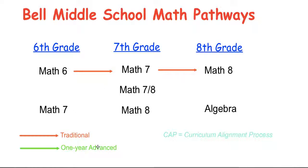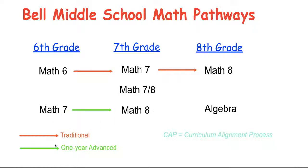The one-year advanced route is for students who have already taken Math 6. As I mentioned, the CAP is crucial here — if your student has not taken Math 6, they would have essentially skipped an entire year of math. Students who have taken Math 6 will be able to start in Math 7 in 6th grade, putting them on the one-year advanced track. From Math 7, they go to Math 8, and from Math 8, they go to Algebra.